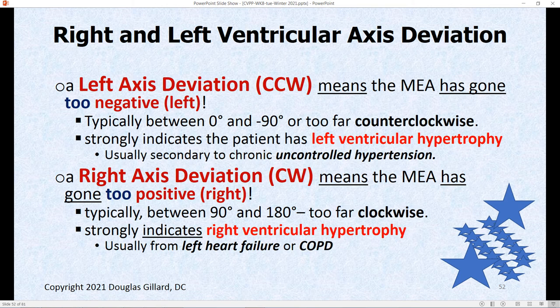A left axis deviation means it's too far counterclockwise on the angle of orientation wheel. This strongly indicates the patient has left ventricular hypertrophy, probably from uncontrolled hypertension. After about 30 years of this, their heart will be gone — they may be 50 or 60 years old with a shortened life because they didn't take care of their hypertension. Right axis deviation means it went too far clockwise, and that almost always indicates right ventricular hypertrophy, probably from Eisenmenger's syndrome. The most common cause of right heart failure is actually left heart failure, which backs up through the lungs into the right heart.